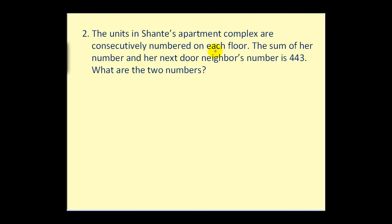The units in Shantae's apartment complex are consecutively numbered on each floor. The sum of her number and her next door neighbor's number is 443. What are the two numbers? Well first, let's talk about consecutively numbered. That essentially means that if one of the doors is 22, the next door would be 23. Or if one of the doors was 45, the next door would be 46.